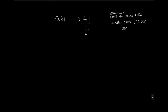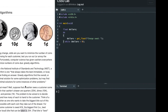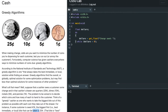Coins starts at zero. While cents is greater than or equal to 25, you keep subtracting 25 and incrementing the coins variable because you've used one more coin. If you subtract 25 from 41 you get 16. Since 16 is not greater than or equal to 25, you exit the loop. This is the greedy approach — take the largest denomination, then the next largest: 10, 5, 1.